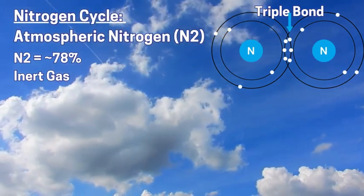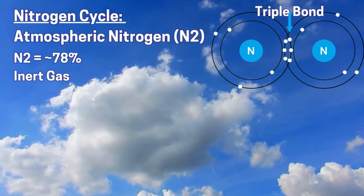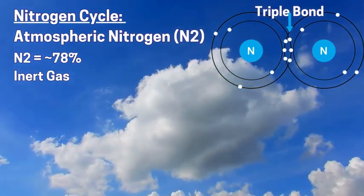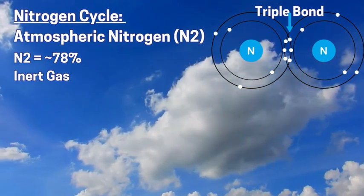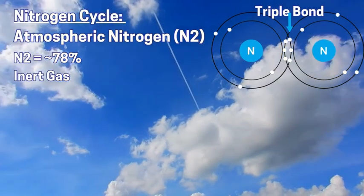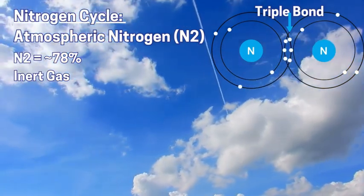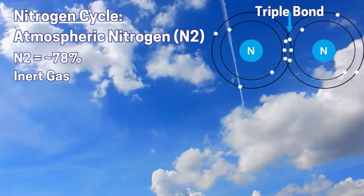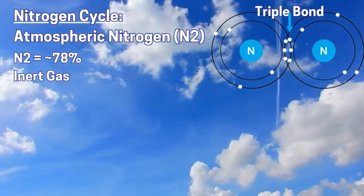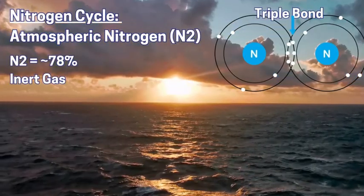Because nitrogen is an inert gas, it doesn't really react with any other elements or gases in the atmosphere. It requires extra energy to react chemically. In terms of the nitrogen cycle, it has to be changed and added to in order to form a larger nitrogen compound that is useful for biomass and ecosystems.